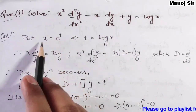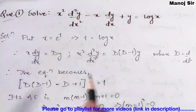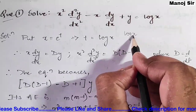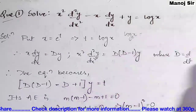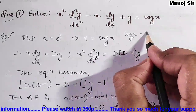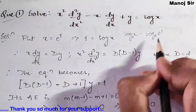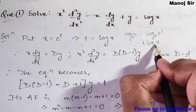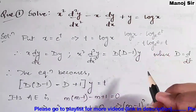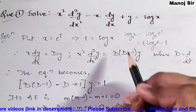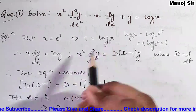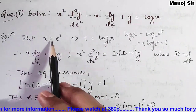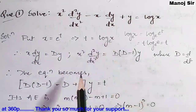For this equation we need to put x equals e to the power t. If you take log on both sides — log base e of x — this becomes t times log e base e, and since log e base e equals 1, we get t equals log x base e. So after putting x equals e^t, t becomes log x.